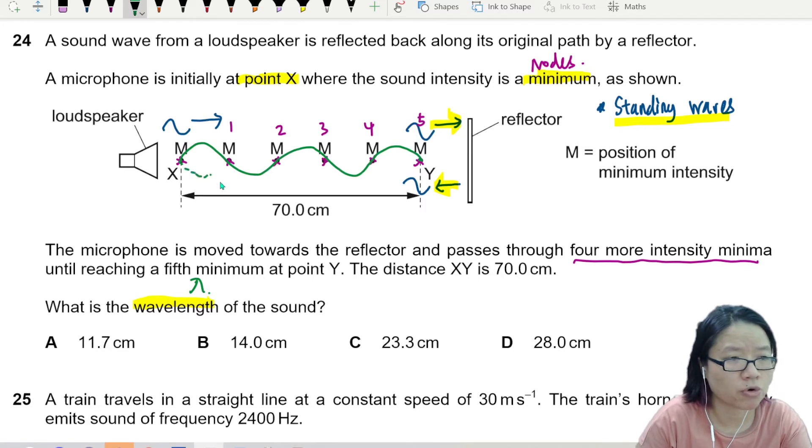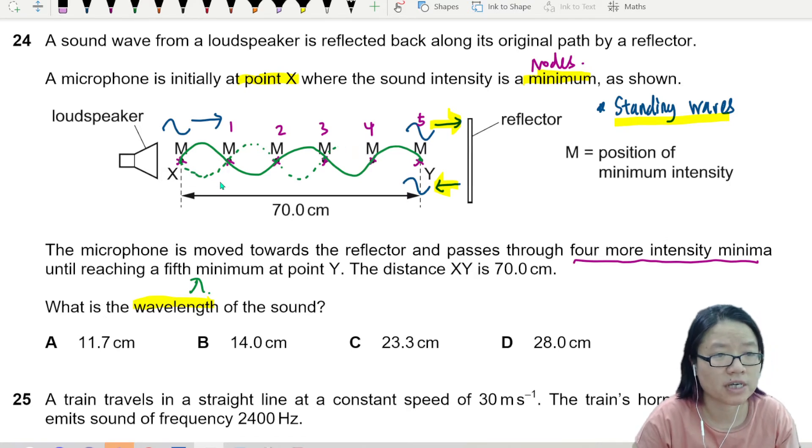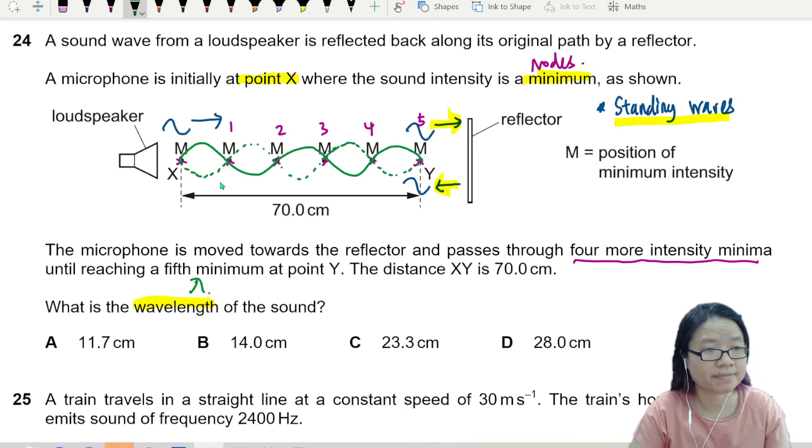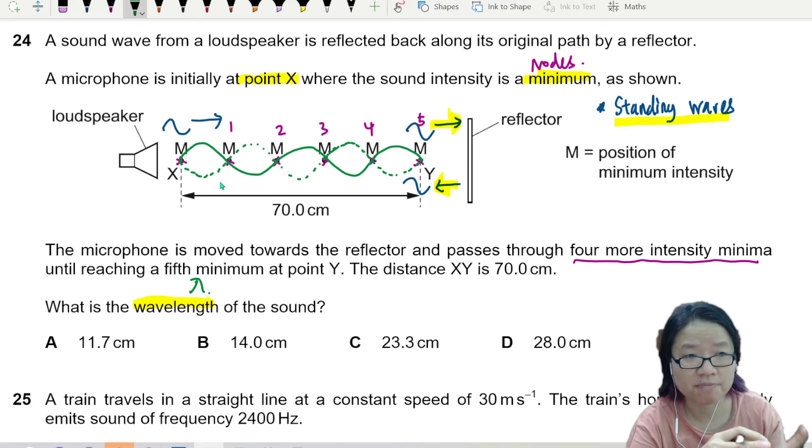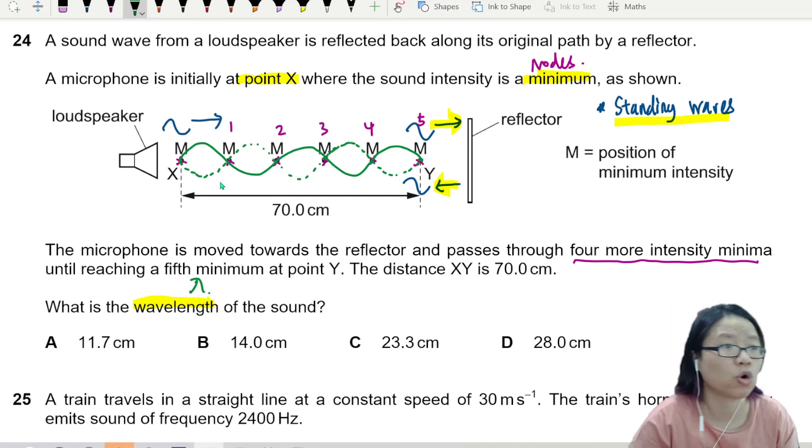So think about drawing your standing wave pattern. The dotted line is the position of one of the wave profiles and the subsequent wave profile is the full line. So these are all your nodes. So if you can draw out the stationary wave pattern, then you can actually count your lambda.